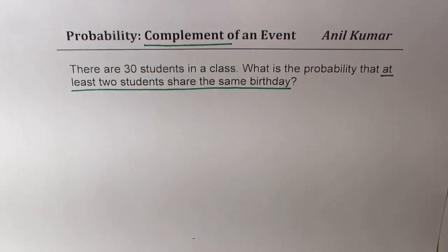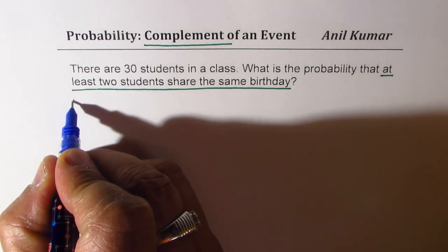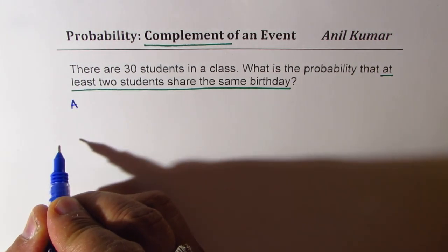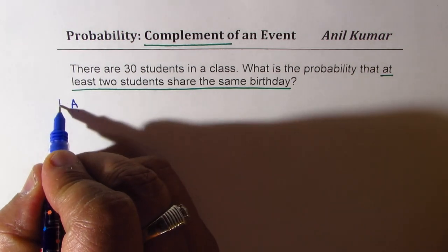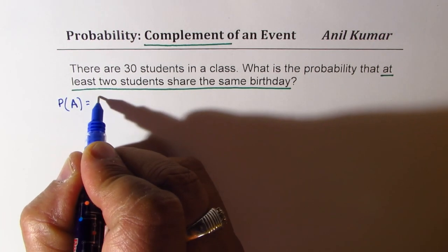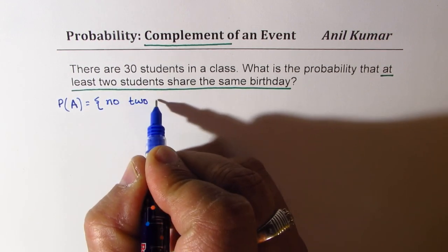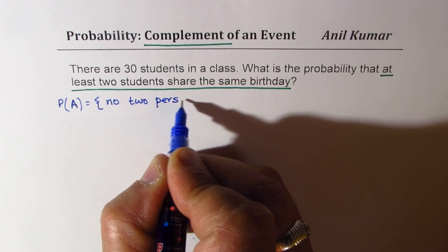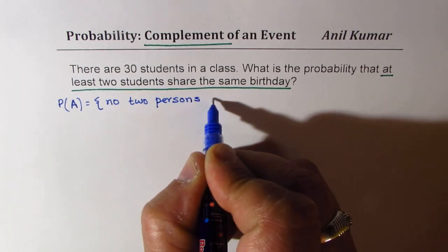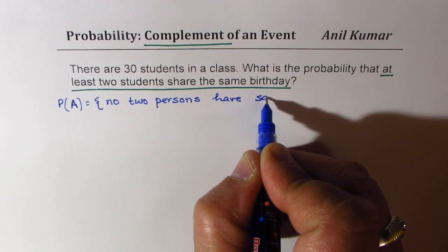So we could reframe our question and find probability that no two people have the same birthdays. So we will define probability of event A as no two persons have same birthday.